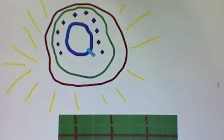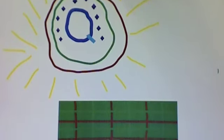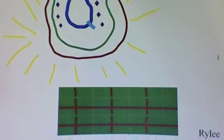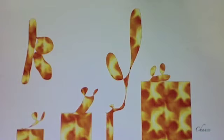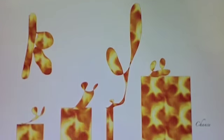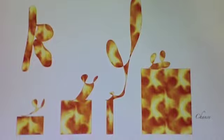Q is for quilt for your long winter's nap. R is for ribbons trimming presents you wrap. S is for Santa Claus, stockings, and sleigh.